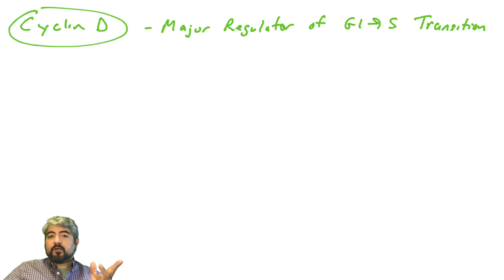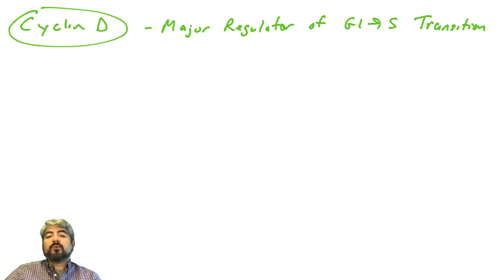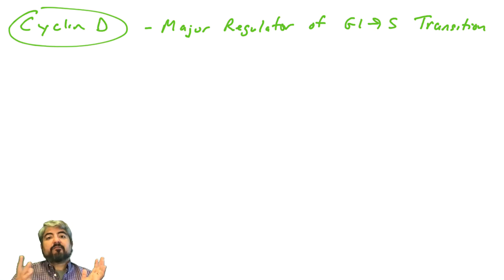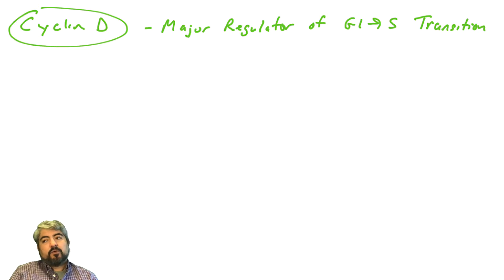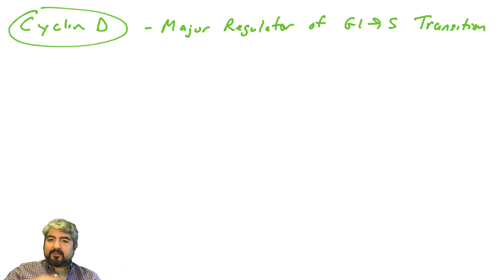In this video we're going to continue talking about cyclin D. It is a major regulator of the G1 to S transition and is commonly dysregulated in human cancers. We need to first talk about how cyclin D is regulated, which we'll cover in this video, and then we'll talk about cyclin D's function in the next video.